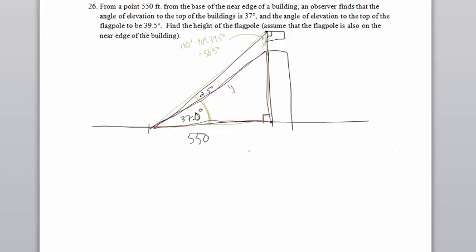I can set up a cosine equation. So the cosine of 37 degrees is equal to this side right here, the adjacent side of 550 divided by the hypotenuse, which I'm trying to find, which is y. And that will give me the hypotenuse of this smaller right triangle.